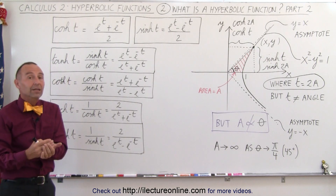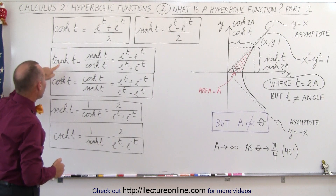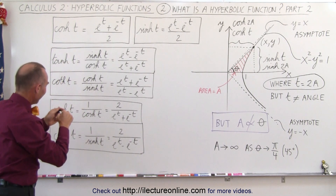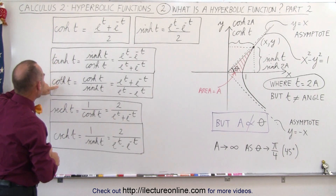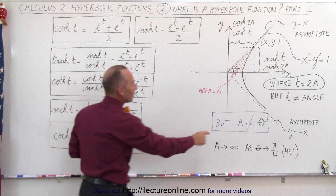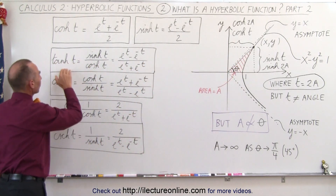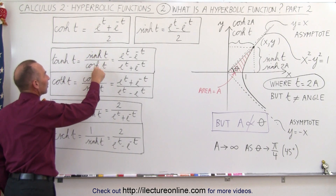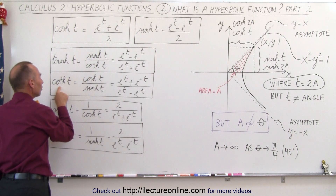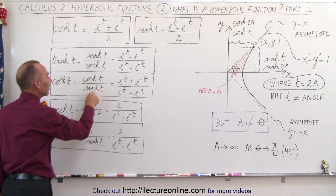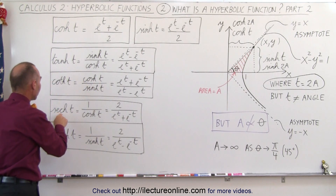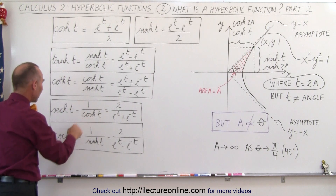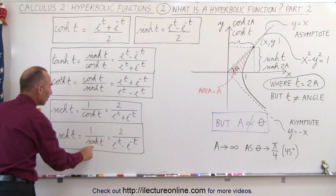Now where the similarities come in: we also have a hyperbolic tangent and a hyperbolic cotangent of the variable t — t being equal to twice that area. The hyperbolic tangent is defined as the hyperbolic sine divided by the hyperbolic cosine, and the hyperbolic cotangent is defined as the hyperbolic cosine divided by the hyperbolic sine. Likewise, we have a hyperbolic secant defined as 1 over the hyperbolic cosine, and a hyperbolic cosecant defined as 1 over the hyperbolic sine.